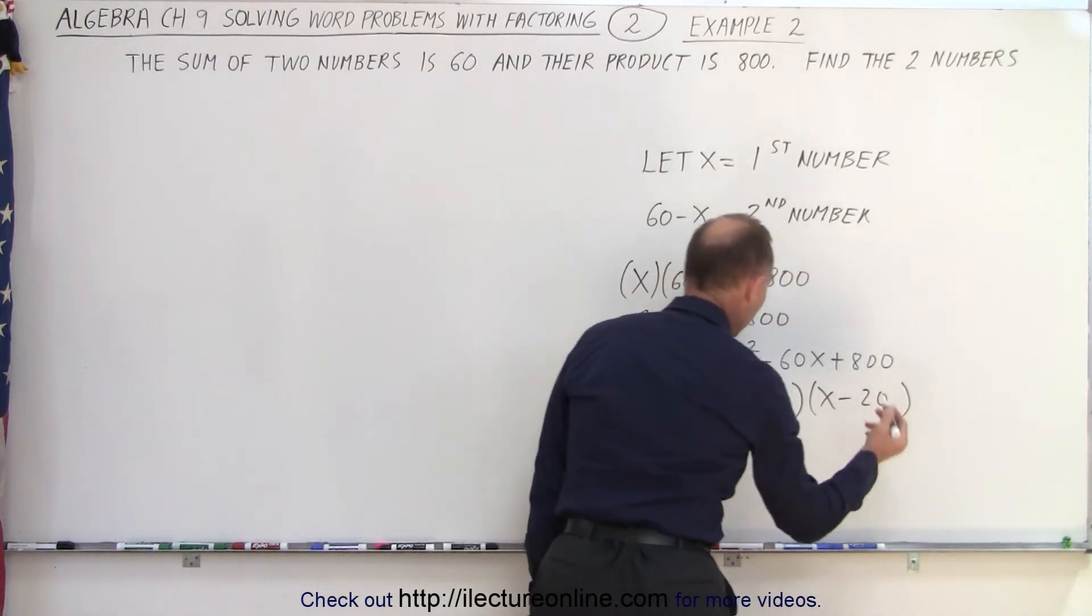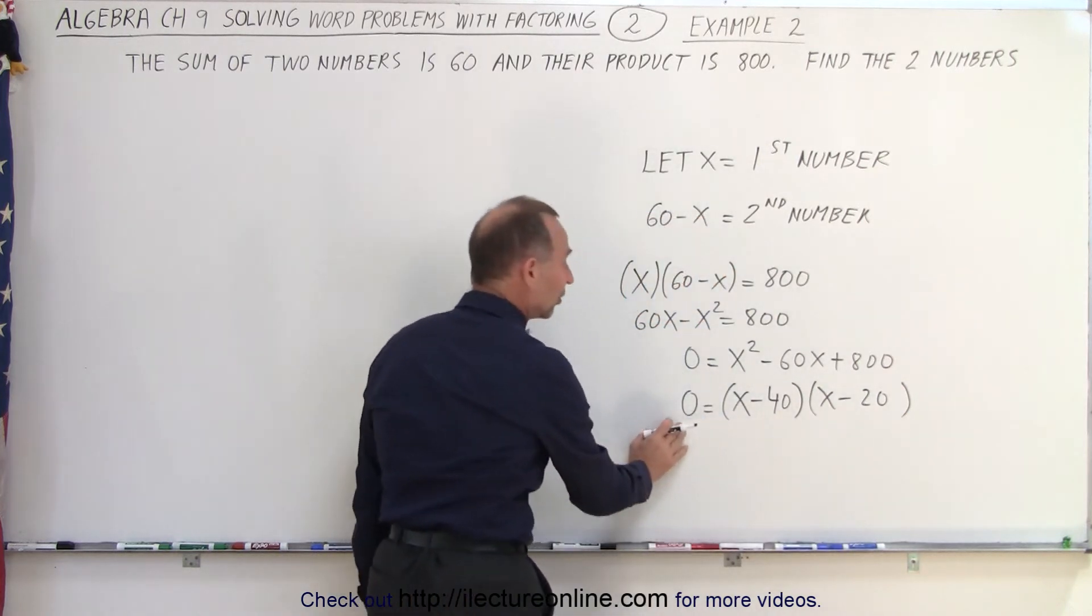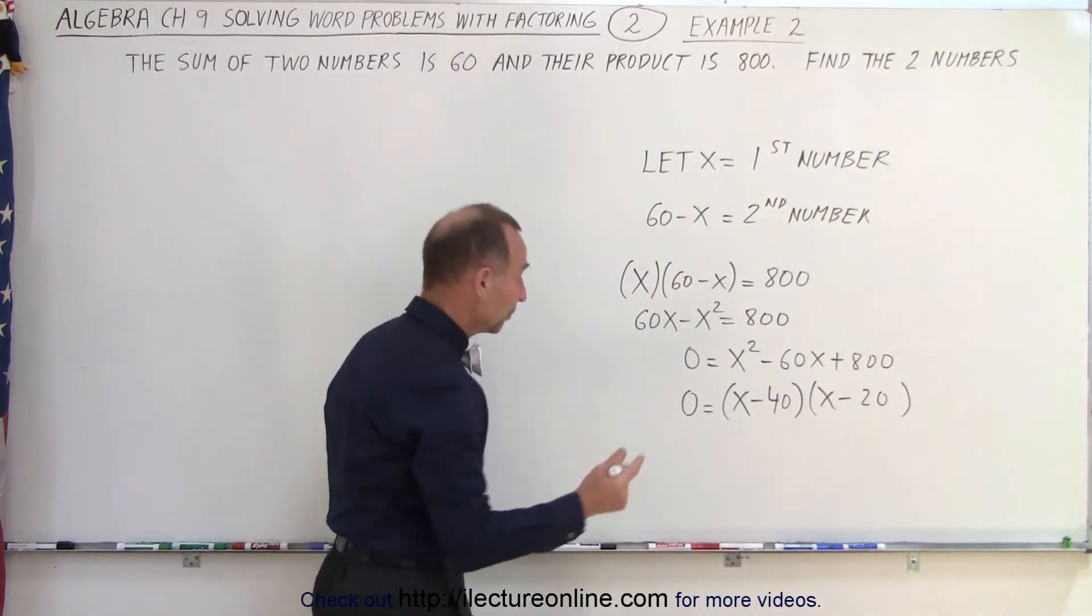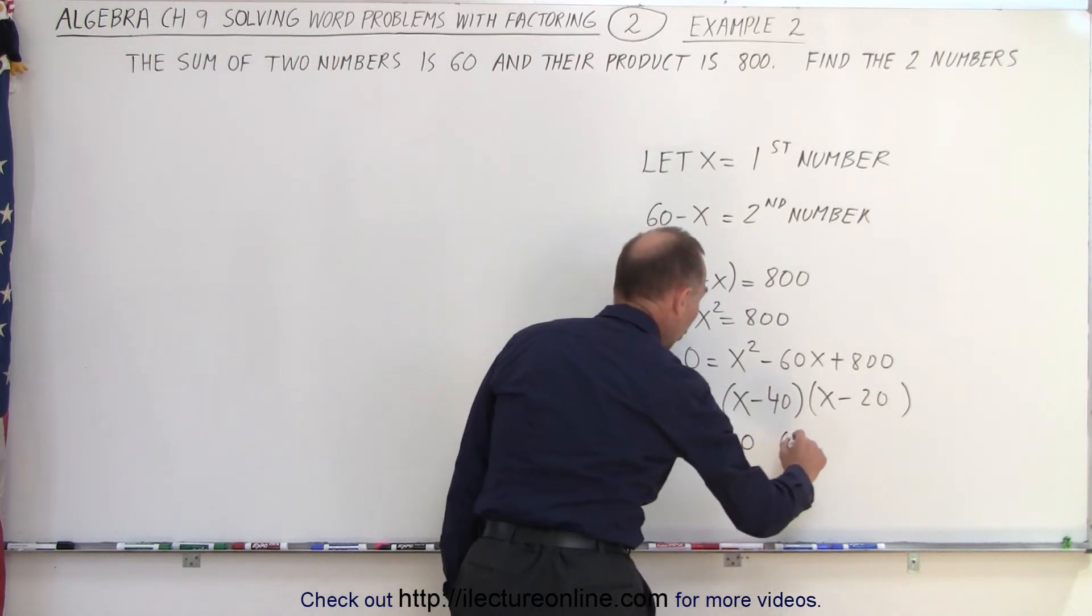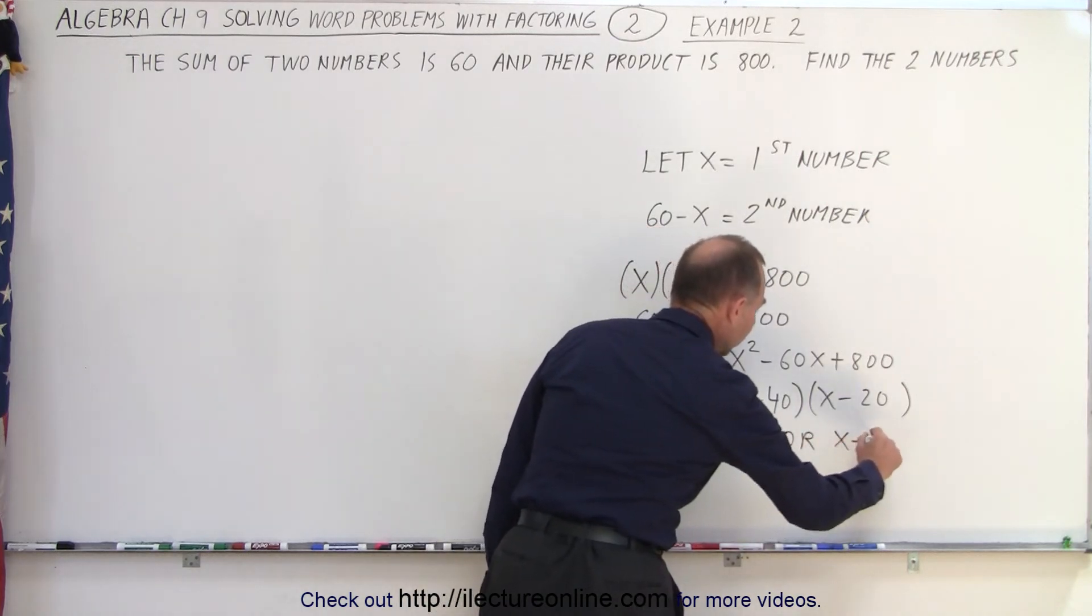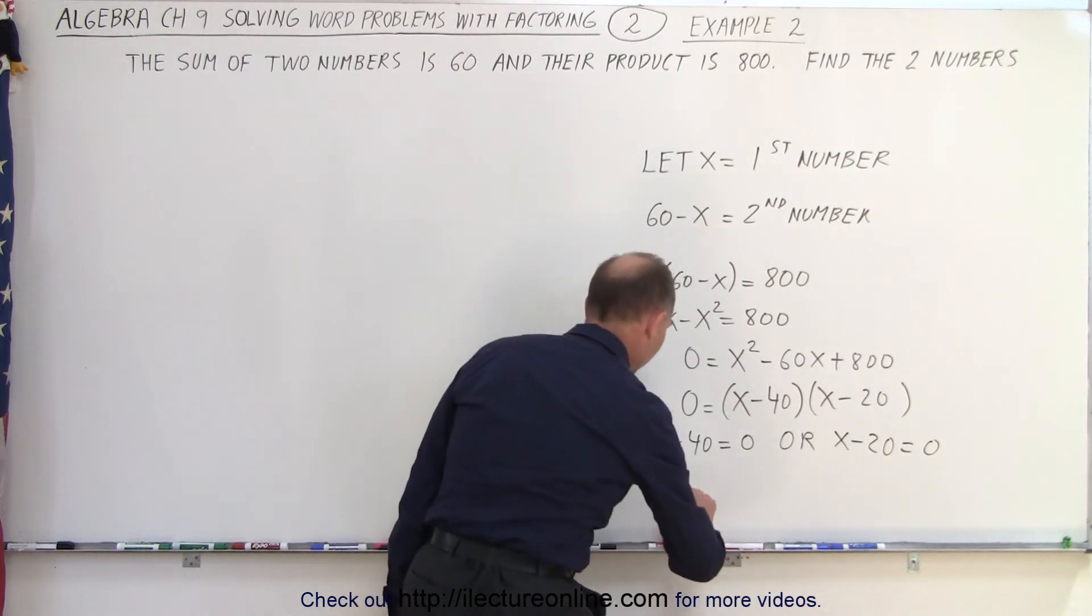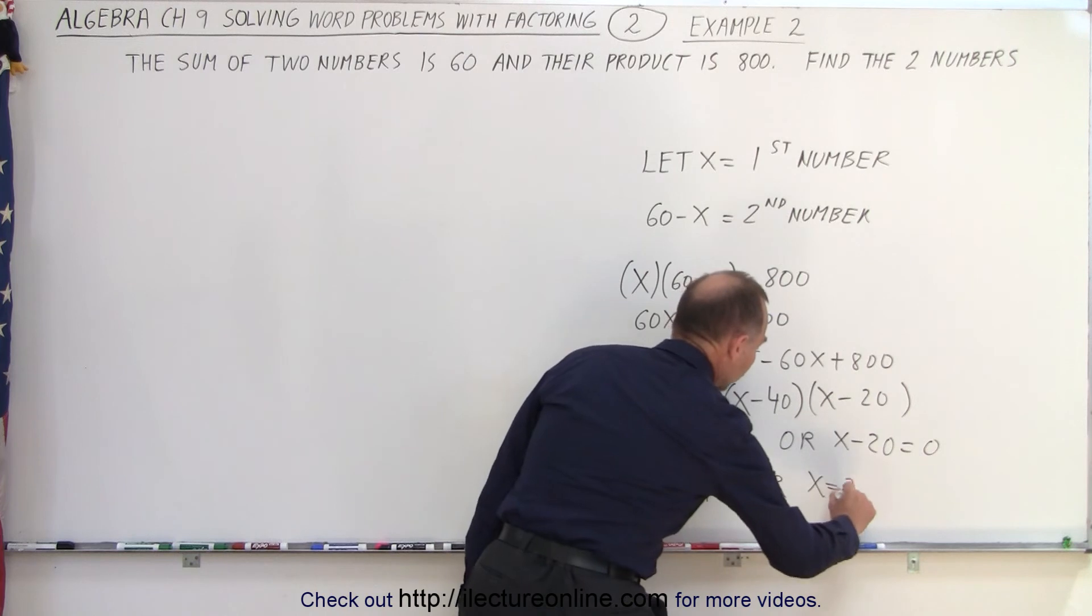So 40 and 20, which means that if I multiply two binomials and that equals 0, then either the first or the second binomial is equal to 0. So that means that x minus 40 equals 0, or x minus 20 equals 0. That of course then means that x equals 40, or x equals 20.